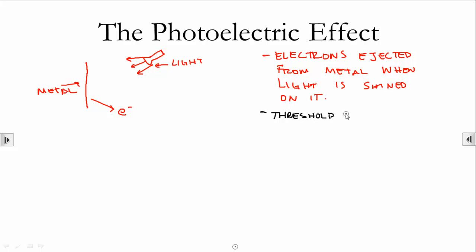We'll call it threshold energy. This is the minimum required energy to eject an electron. If my photon of light has something less than the threshold energy, it's not going to make that electron jump off the metal.